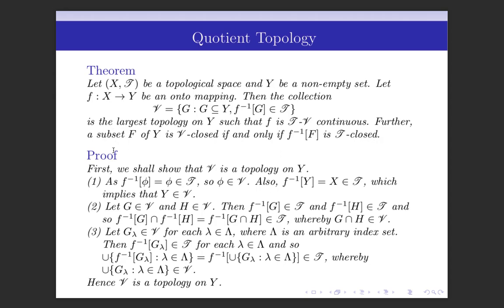First we shall show that V is a topology on Y. We show that φ and Y belong to V. The inverse image of φ under F is equal to φ, and that belongs to the topology T on X, so φ belongs to V. Since the inverse image of Y under F is equal to X, and X belongs to T, so from the definition of V it is clear that Y belongs to V.